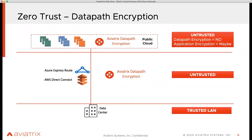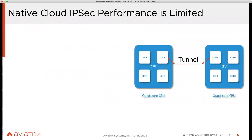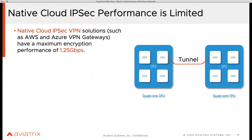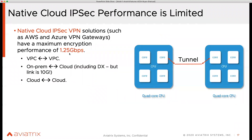Why is it limited? If you look at the way other vendors or cloud providers build the tunnel, they actually use only one CPU core out of the virtual machine or instance — they have no way of utilizing all the cores to build those tunnels. That's why you see performance limited to 1.25 GB. And this is true not only when connecting cloud to on-prem, but also when connecting VPCs together or crossing clouds.